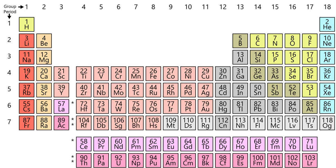White phosphorus has a density of 1.823 g/cc, is soft as wax, pliable, and can be cut with a knife. It melts at 44.15°C and, if heated rapidly, boils at 280.5°C. It otherwise remains solid and transforms to violet phosphorus at 550°C. It has a body-centered cubic structure analogous to that of manganese, with unit cell comprising 58 P4 molecules. It is an insulator with a band gap of about 3.7 eV.